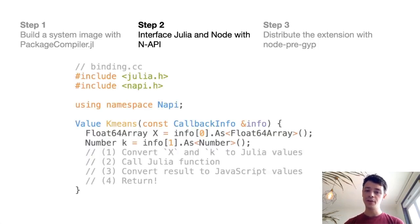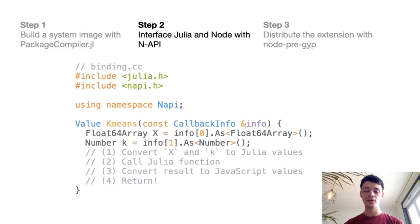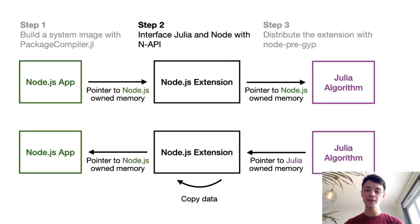Basically, to write your extension, all you need to do is define a C++ function that takes as input the arguments from the JavaScript side, converts those arguments to Julia values, calls the Julia function with those values, and then converts the results back to JavaScript values. One interesting thing you can do in this extension is share memory between the Node.js application and the Julia algorithm.